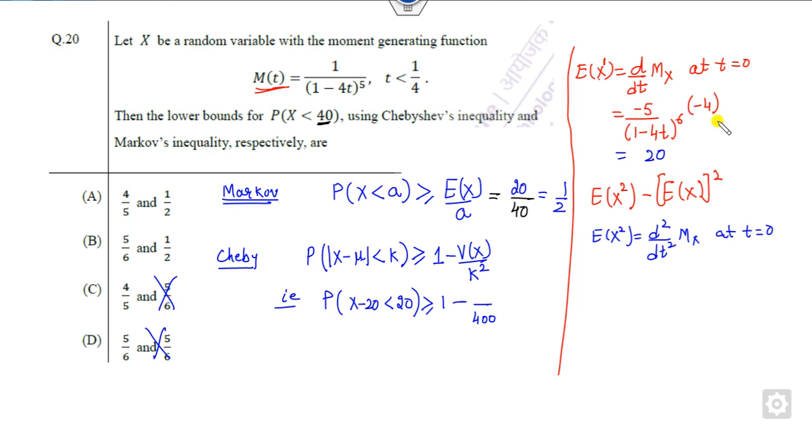Therefore, since this is the first derivative of this, you can take the second derivative again, so it is minus 5, it is minus 6 upon 1 minus 4t raised to power 7 and this is minus 4 and minus 4. At t equals 0, this denominator will be 1, this is 480.